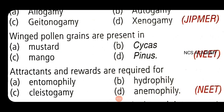Next, another important question: attractants and rewards are required by entomophily. Entomophily is the most common type of zoophily, where pollination takes place through the agency of insects. Entomophilous flowers are highly coloured and secrete nectar to attract visiting insects. So attractants and rewards are obtained by entomophilous flowers.